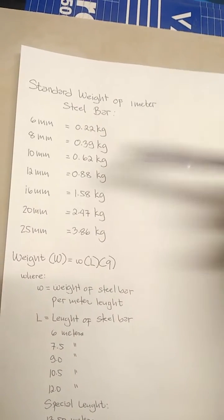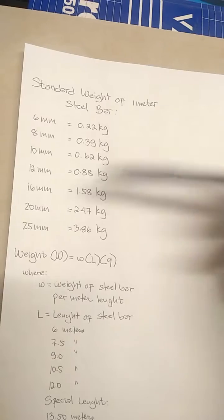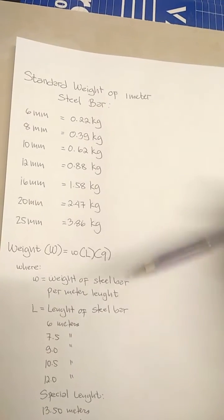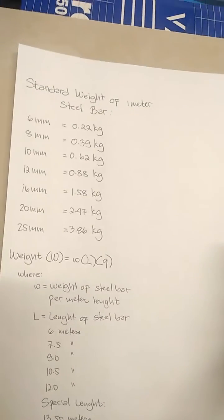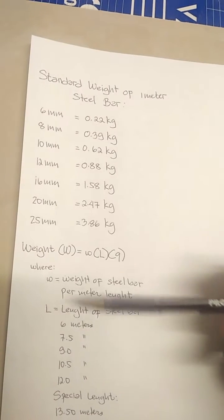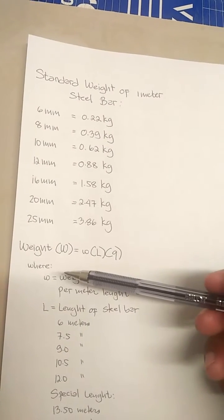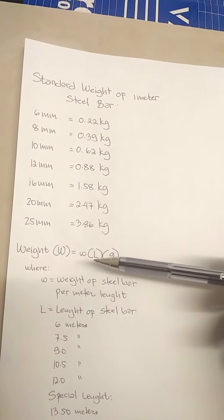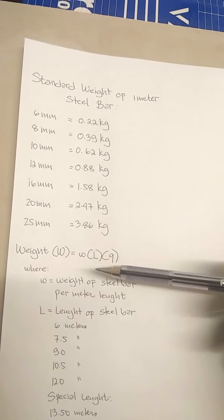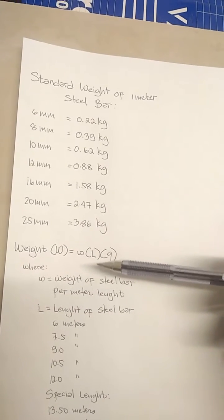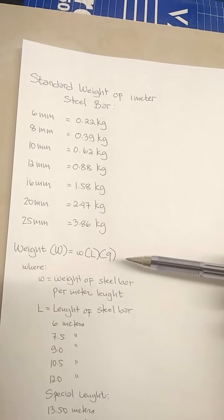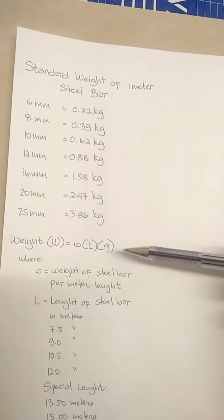If we have these values, we can already compute the weight of the steel bar. We just follow this formula: weight is equal to the weight of the steel bar per meter length, times the length of the steel bar being used, multiplied by the quantity of the steel bar.